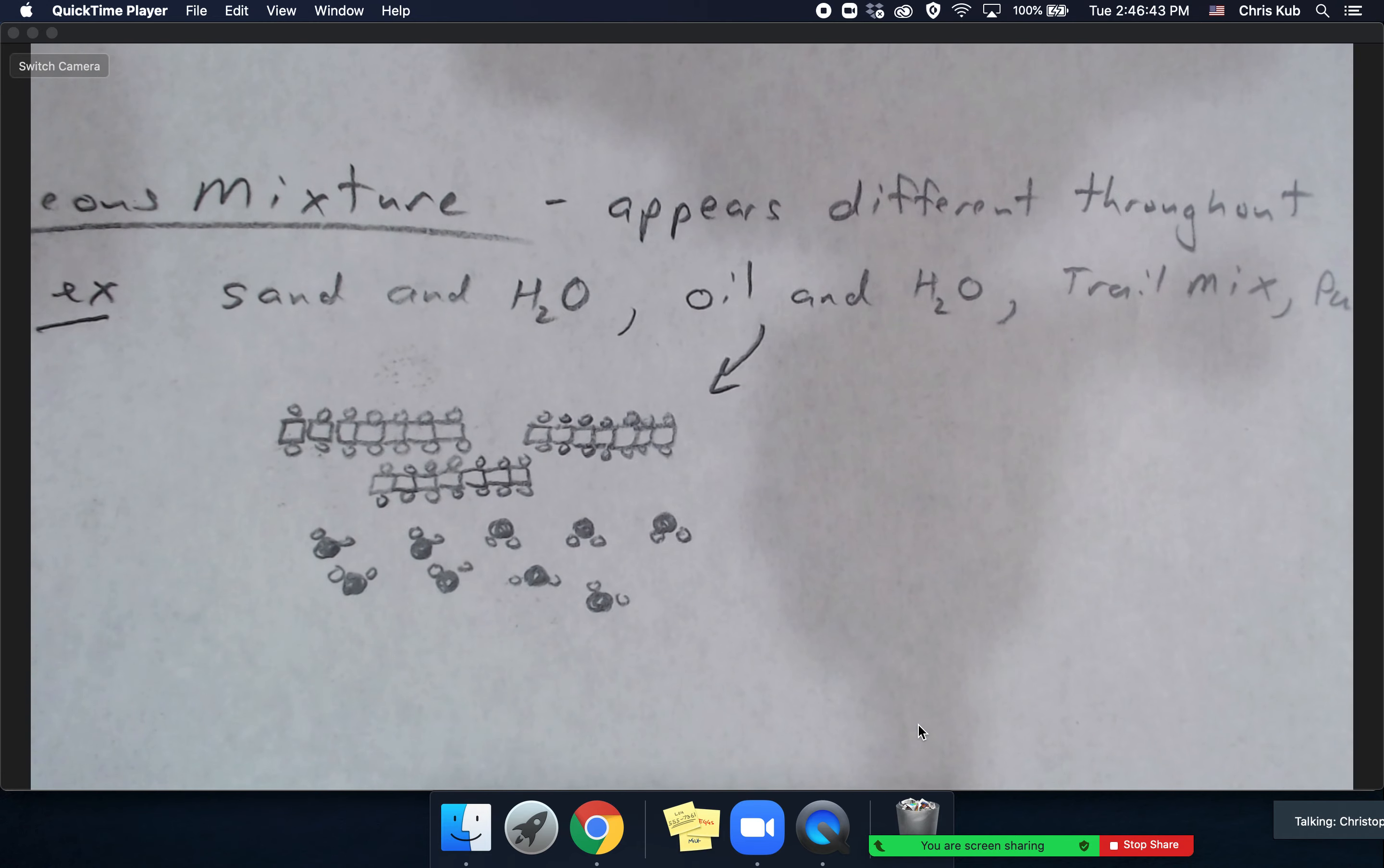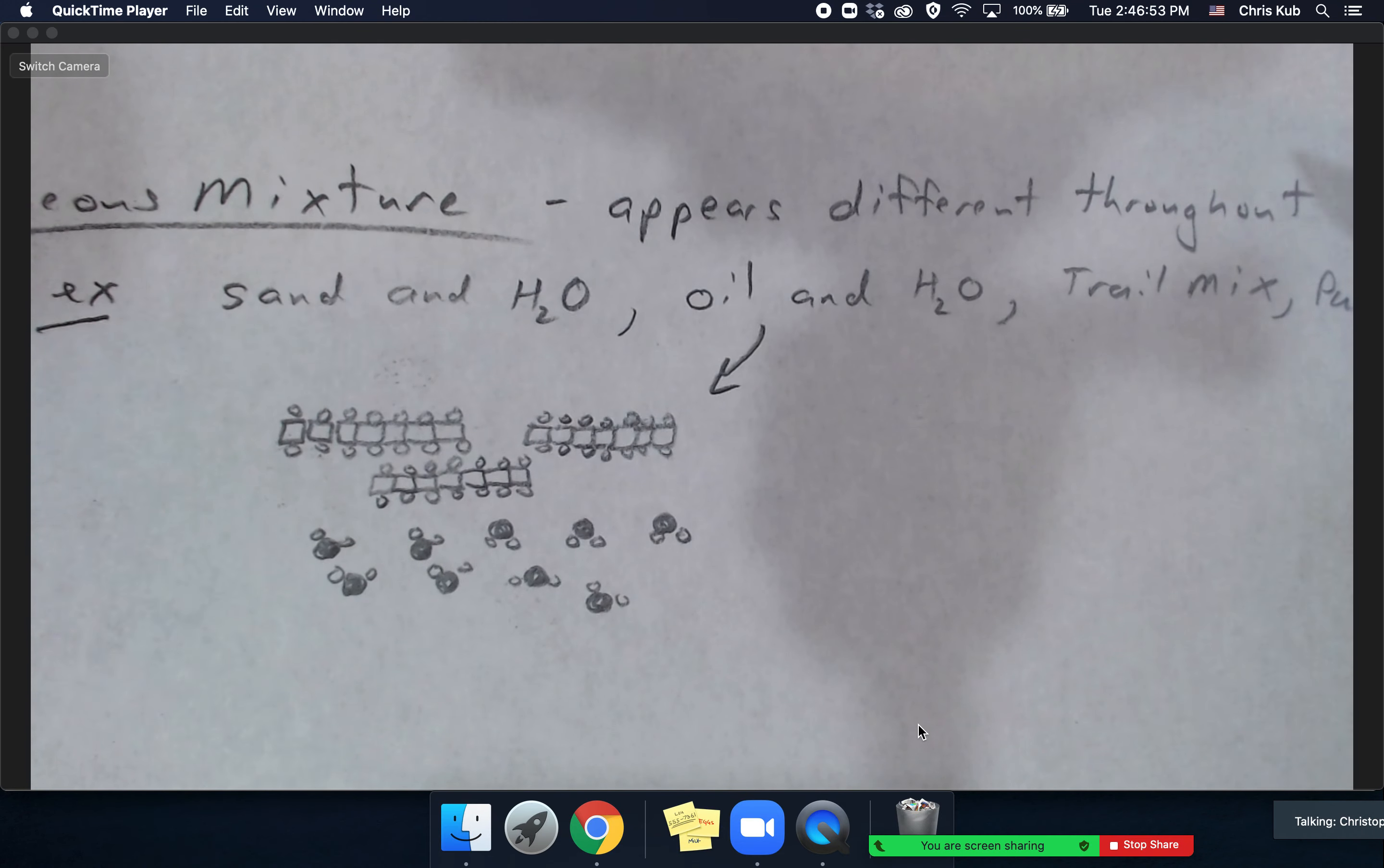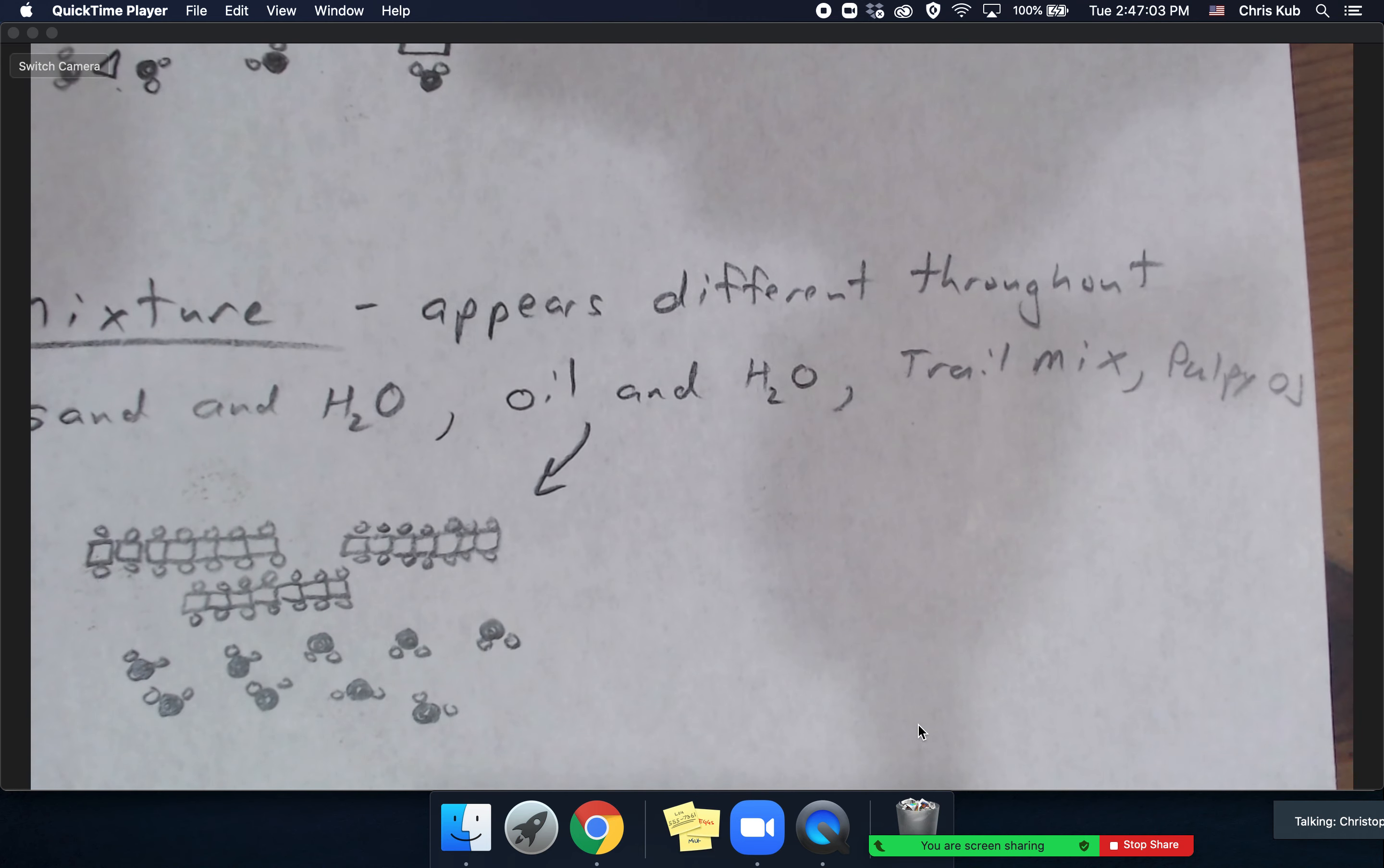Oil will hang out on the top of water because water isn't really attracted to oil. Instead, water is more attracted to itself - it's got the ability to hydrogen bond with other water molecules. So they don't mix up very well and oil will go on top because it's less dense. Sand mixed up with water, trail mix, pulpy orange juice - these are some common examples that I might put on assessments. Thanks for watching.